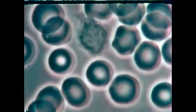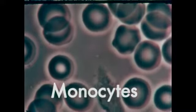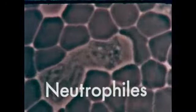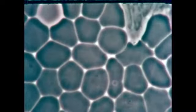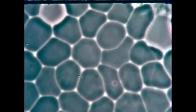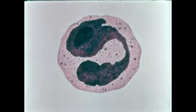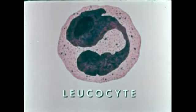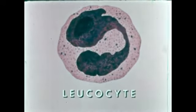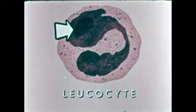The blood also contains white cells or corpuscles. These are monocytes, and these, the neutrophils. Unlike the red cells, white cells have nuclei. You can see the structure of a white cell, or leukocyte, in this drawing of a stained cell. The entire dark area of this cell is the nucleus. It is surrounded by cytoplasm.